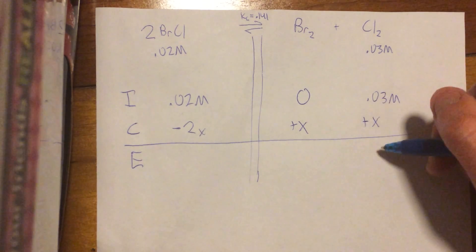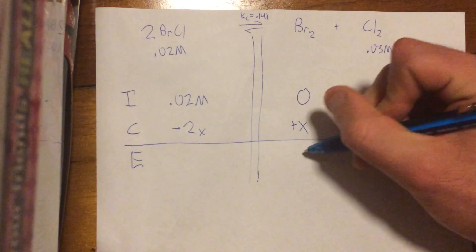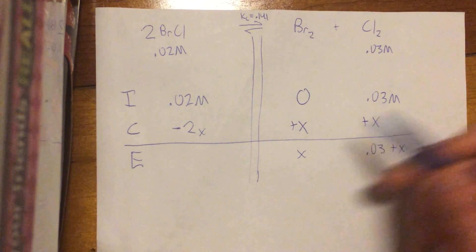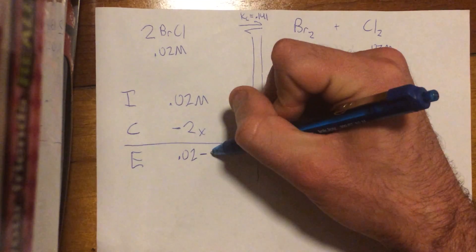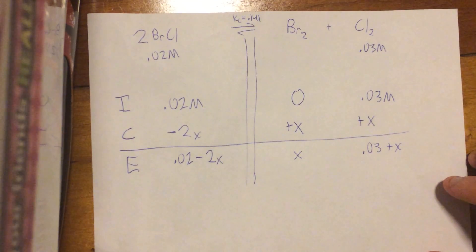All right, so then you just drop this down. So 0.03 plus x, and 0 plus x, that's just x, and 0.02 minus 2x. All right, so there's the ice table.